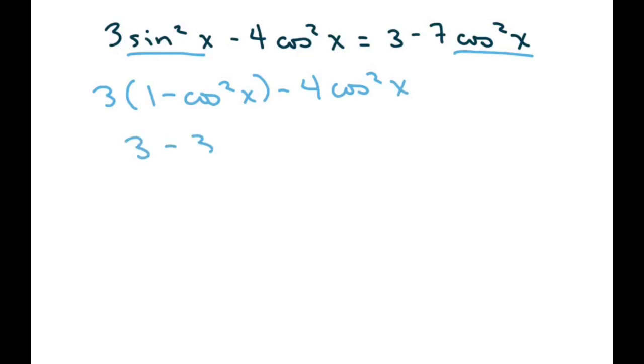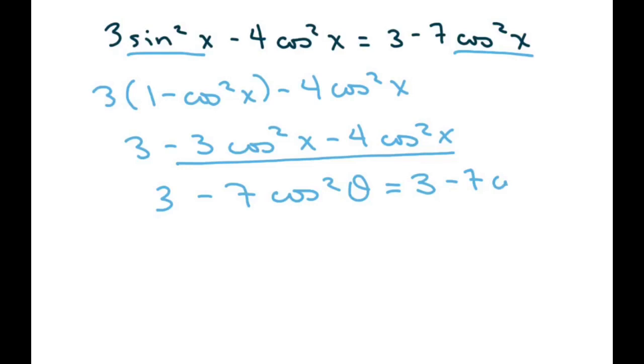Distribute. When you combine those two, or we should have used x here. When you combine these two, that's negative seven. So that's going to be minus seven cosine squared of x, which equals our right hand side of the equation.